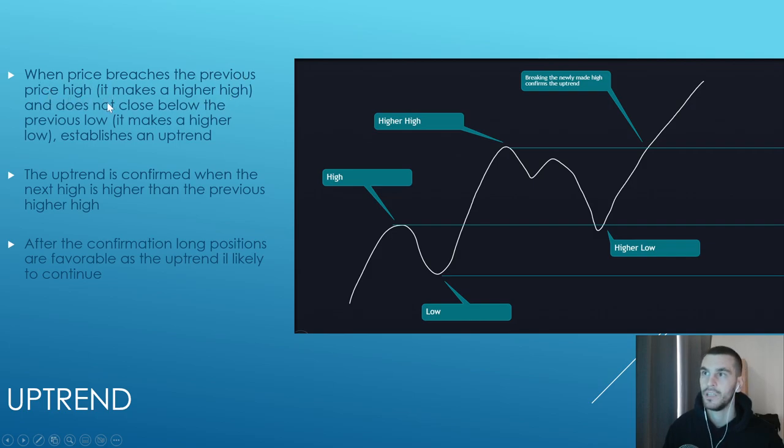When price breaches the previous high, it makes a high and does not close below the previous low, it makes a higher low, establishing an uptrend. The uptrend is confirmed when the next high is higher than the previous higher high. After confirmation, long positions are favorable.